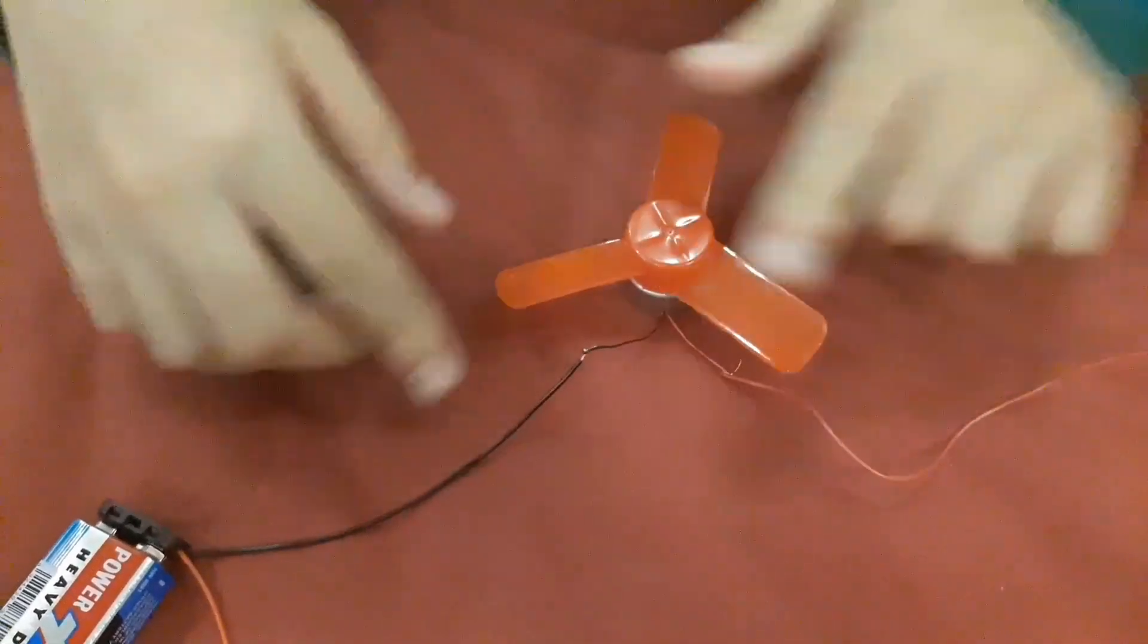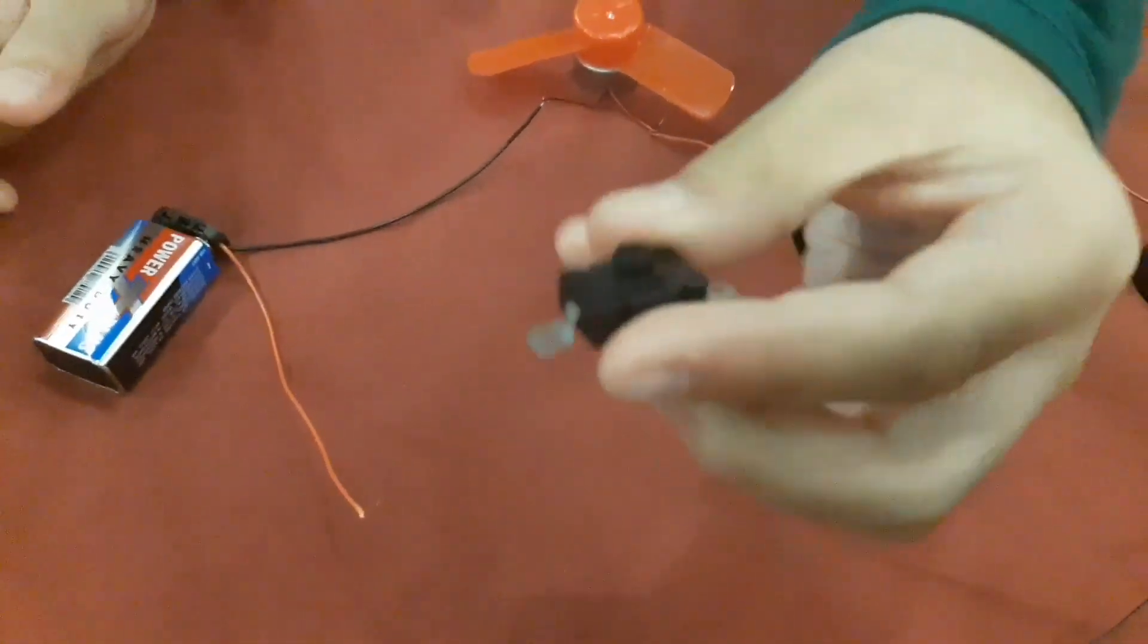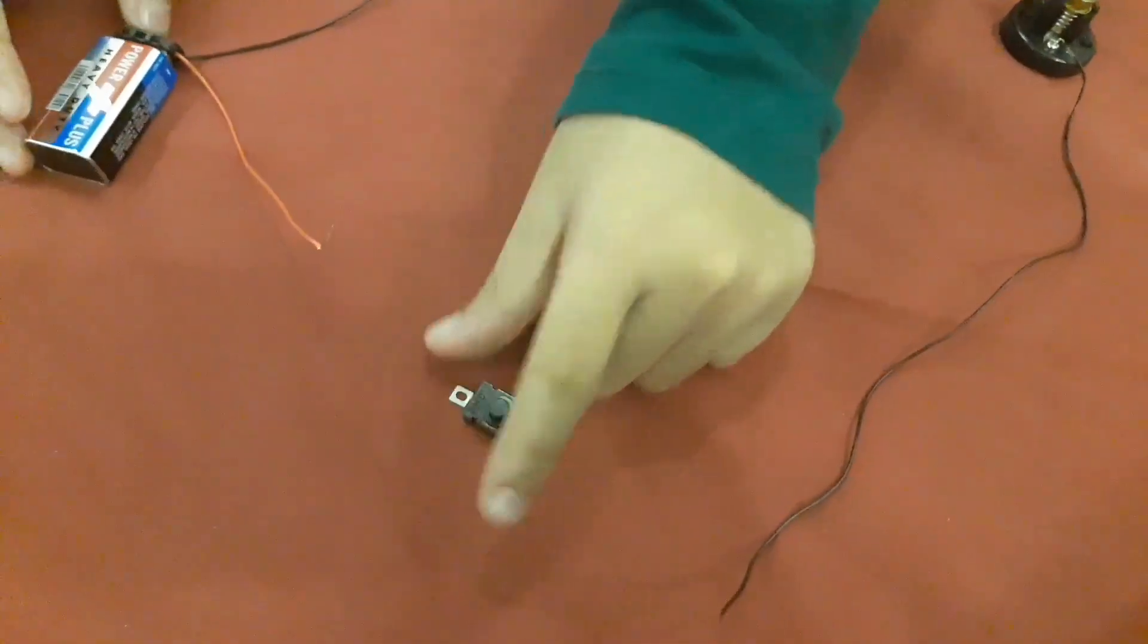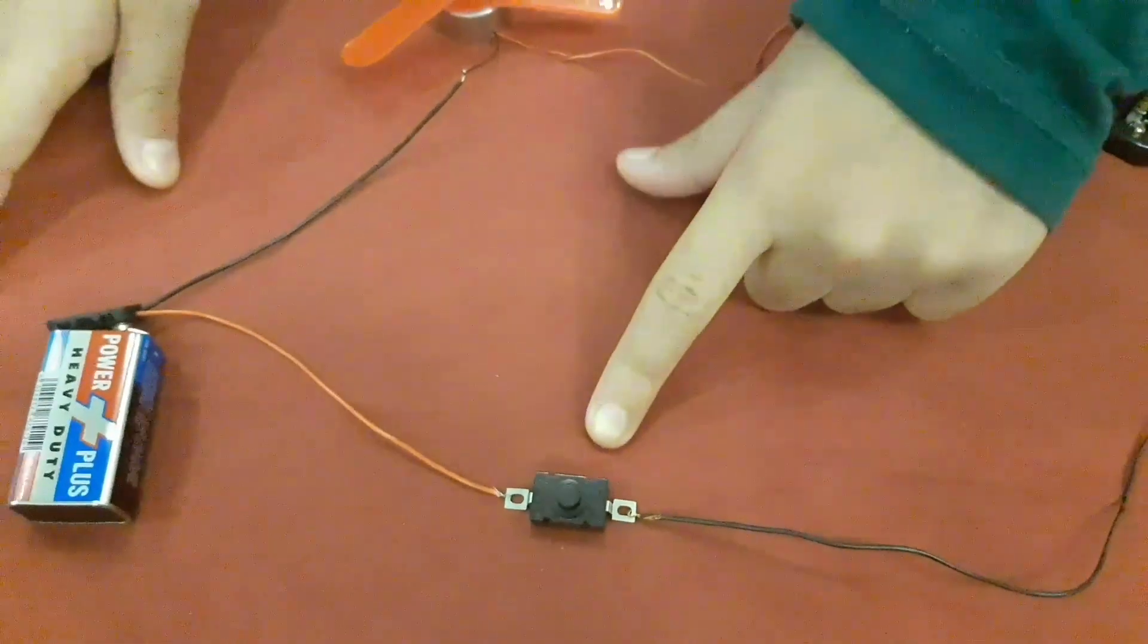And there we go, these are done. Now all I have left is to attach this final switch to these two wires and then we should be done. Now I've attached the switch, it's looking awesome and I really hope it'll turn out great.